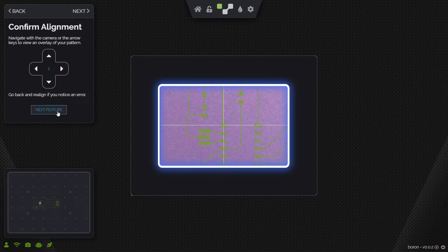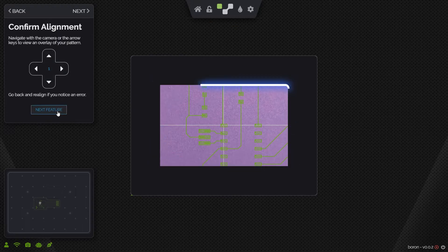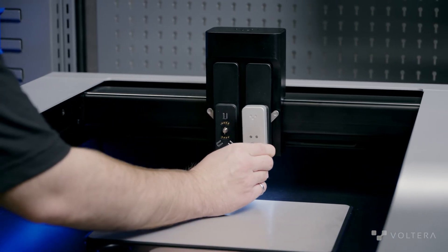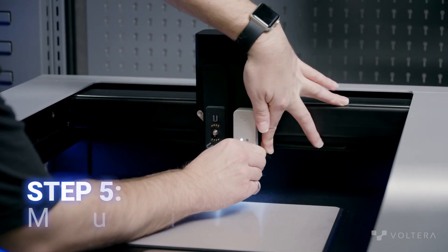This way, I can make sure that I'm printing exactly where I want. I'm now going to mount the smart probe module so NOVA can map the surface of the PET.